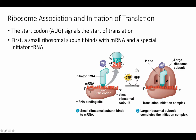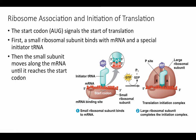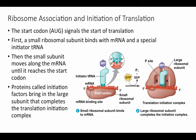The first transfer RNA binds to the AUG codon, then the small subunit moves along the mRNA until it reaches the start codon. Proteins known as initiation factors escort the large ribosomal subunit, causing it to join with the small ribosomal subunit to create the translation initiation complex. Now we have a large and small subunit with the mRNA sandwiched between them, the starter transfer RNA with methionine attached, and we are ready to start growing our polypeptide chain.